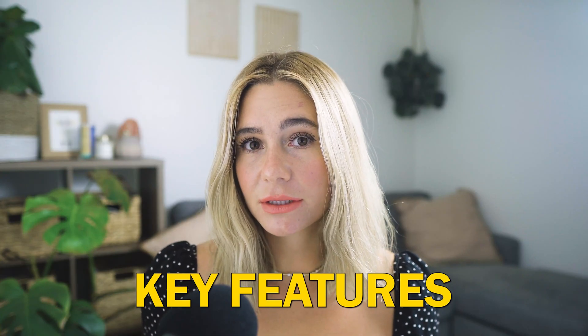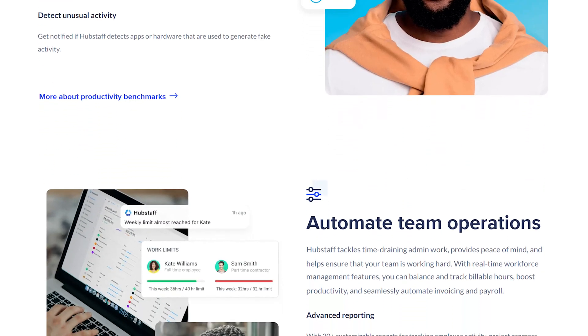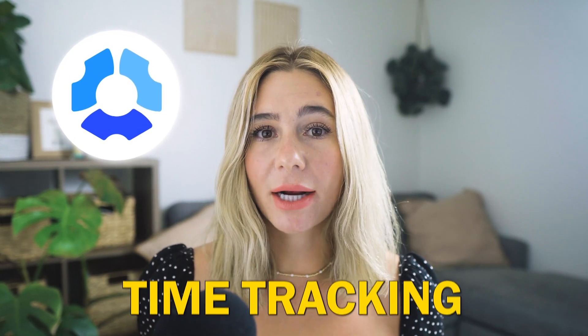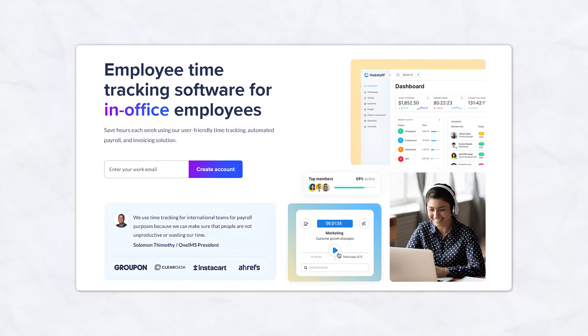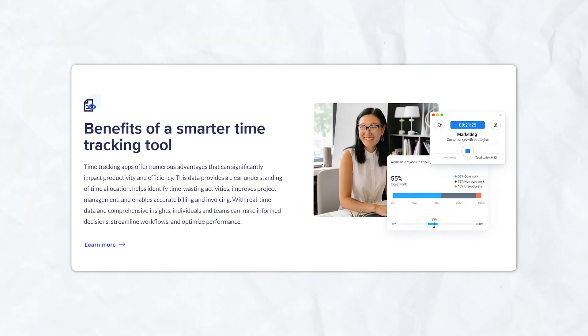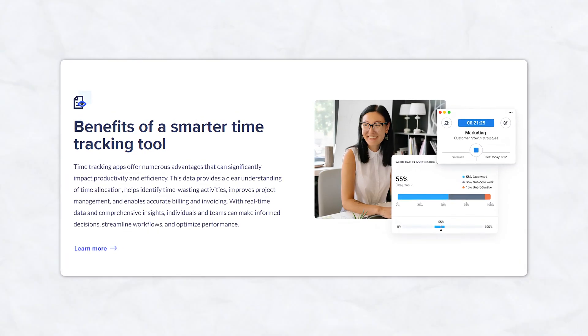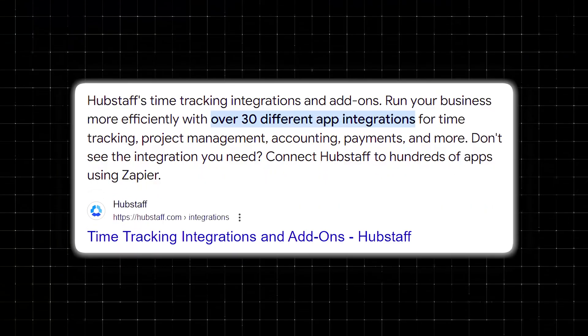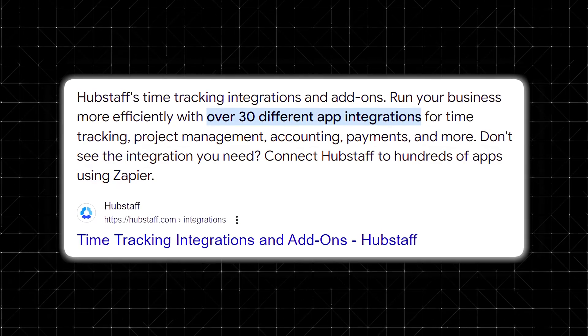Let's talk about their key features. Hubstaff offers a wide range of features designed to help businesses track time, manage teams, and analyze productivity. Starting with time tracking — Hubstaff's primary feature allows employees to clock in and out from anywhere, including desktop, mobile, or even offline. The software automatically tracks time spent on tasks and projects, providing detailed reports on hours worked, idle time, and activity levels. Hubstaff's time tracking also integrates with over 30 other software tools, such as Asana, Trello, and QuickBooks, making it easy to sync data across your business operations.